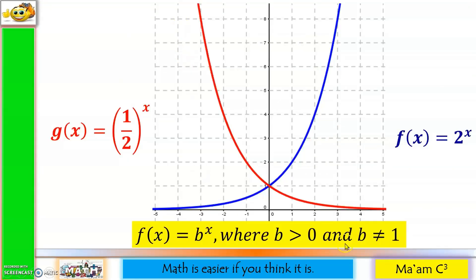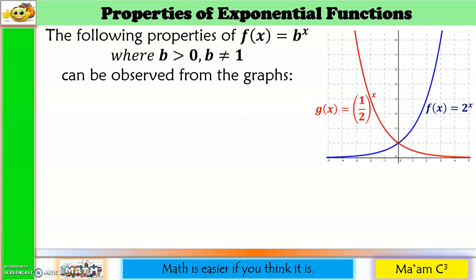Here are the two graphs we produced. The blue one is f(x) = 2 raised to x, and the red one is g(x) = (1/2) raised to x. Both graphs have a base greater than 0 but not equal to 1. Let us now discuss the properties of exponential functions — all properties are observable in these two graphs.